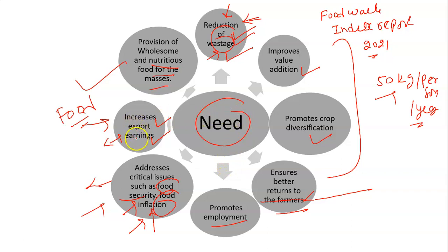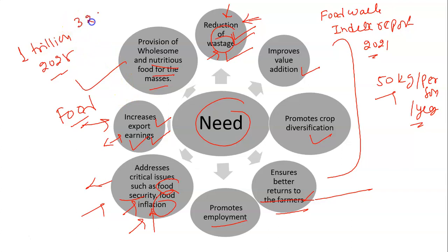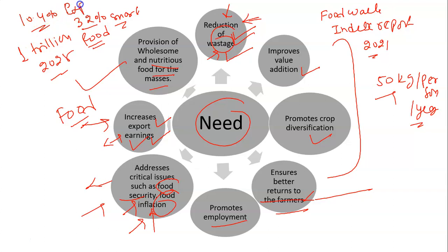Our country is looking to achieve a 1 trillion dollar export target by 2025. We cannot ignore the food processing industry, which has a 32% share in the food market and a 10.4% share in exports. So in a nutshell, if we want to achieve that target, we cannot neglect this sector.